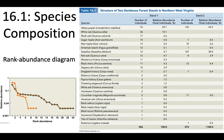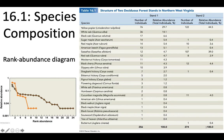Rank abundance diagrams can be really informative for telling you about dominance in the community — whether you have a whole bunch of one species and very little of others. This graph shows rank abundance for two communities: stand one and stand two. You identify all your species, count the number of individuals, and then rank them from the species with the most individuals to the species with the least. The species ranked number one has the most individuals — for both stands that's yellow poplar.